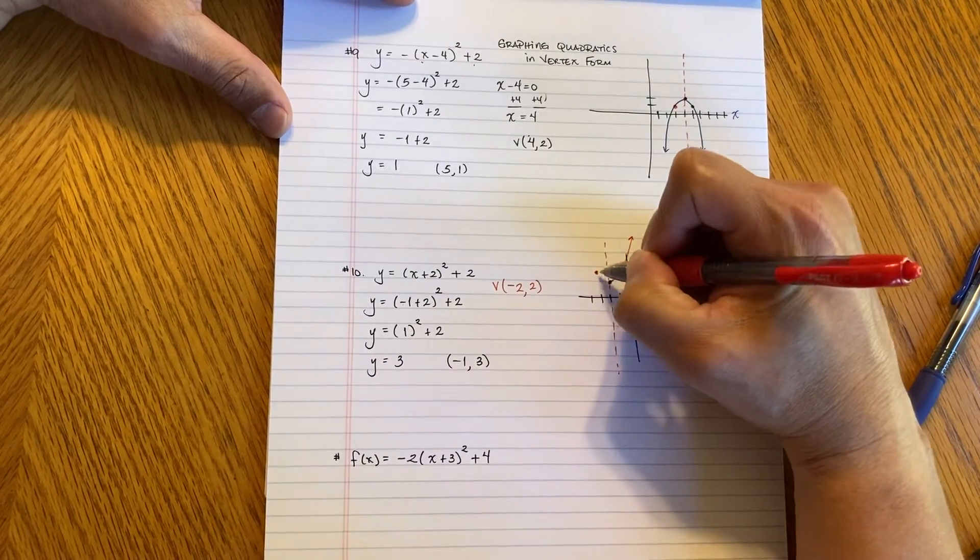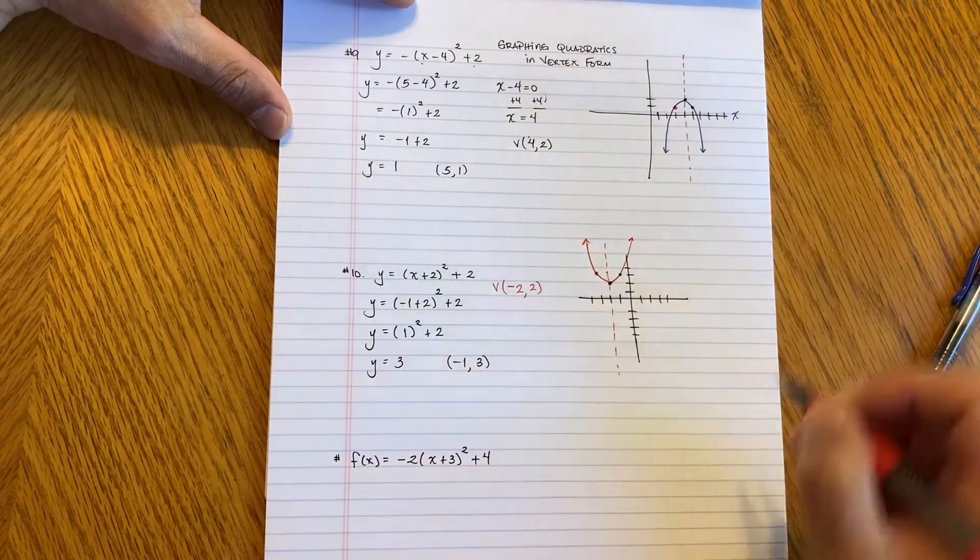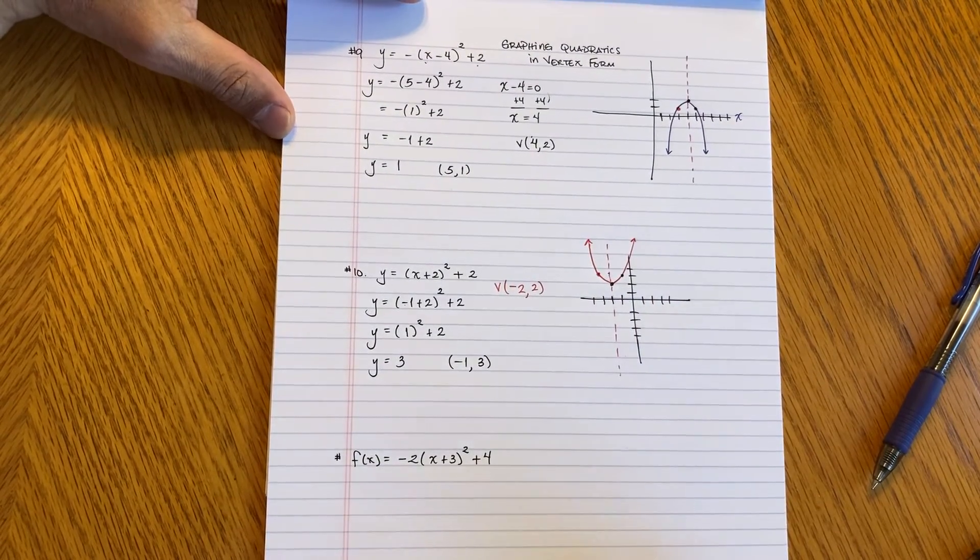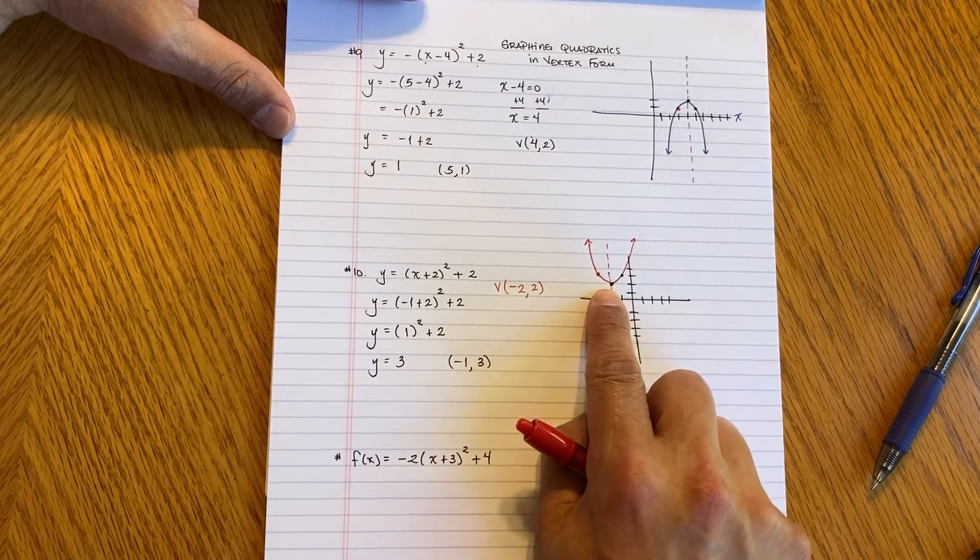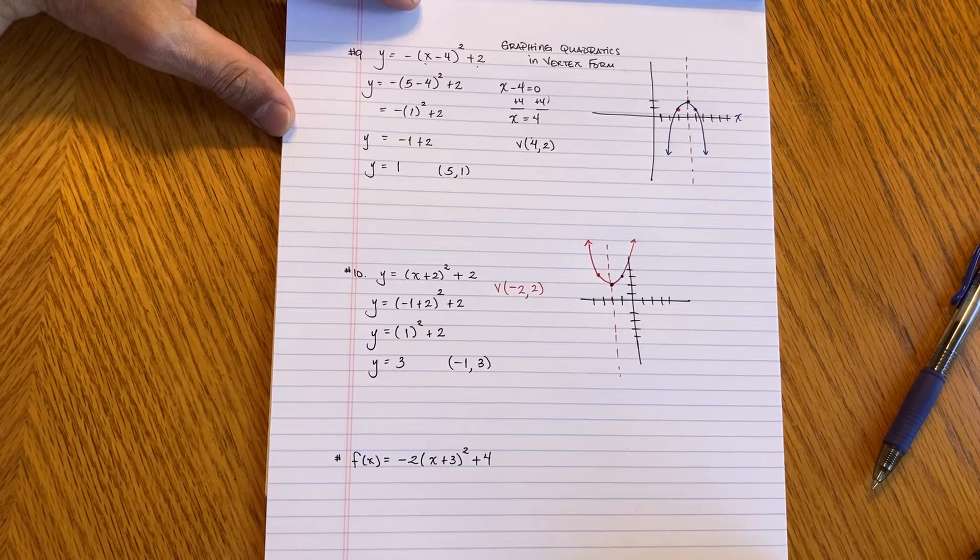I don't know where it crosses the X axis, but for these, I'm not really focused on that. And there it is. So you're focused on the vertex. You're focused on another point, on the symmetry, and this is graphed correctly.